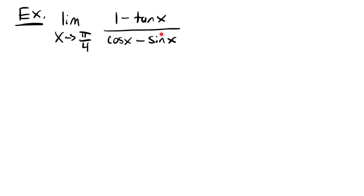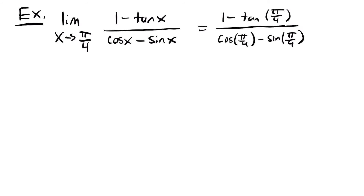Sometimes with these trig limits, you can just plug in your x value even though it looks complicated and still get a nice answer. So we'll have 1 minus tangent of pi over 4 divided by cosine of pi over 4 minus sine of pi over 4. We know that cosine of pi over 4 equals the square root of 2 over 2, and sine of pi over 4 is also square root of 2 over 2, so we're going to have 0 in the denominator. And the numerator gives us 1 minus tangent of pi over 4, where tangent of pi over 4 is 1, so that's also 0 — we still have our indeterminate form. We're going to have to manipulate this function, so I recommend the first thing we do is replace tangent x with sine x over cosine x.